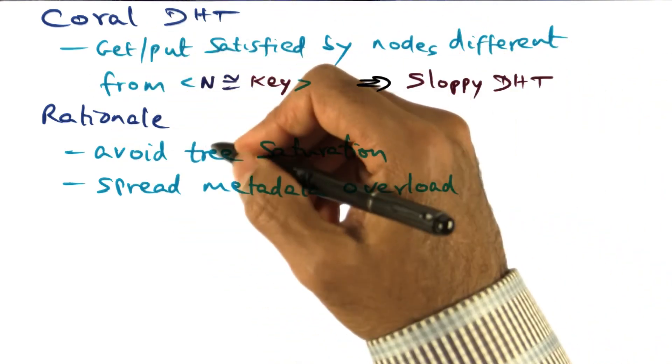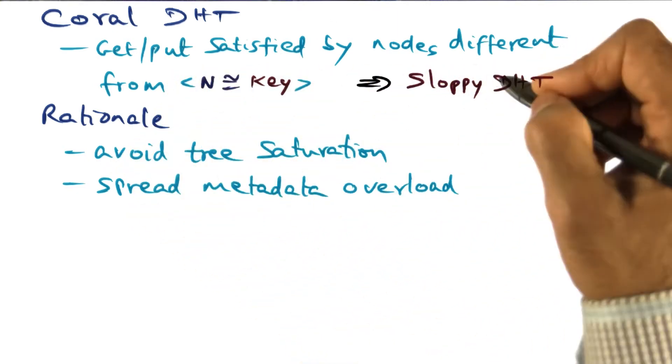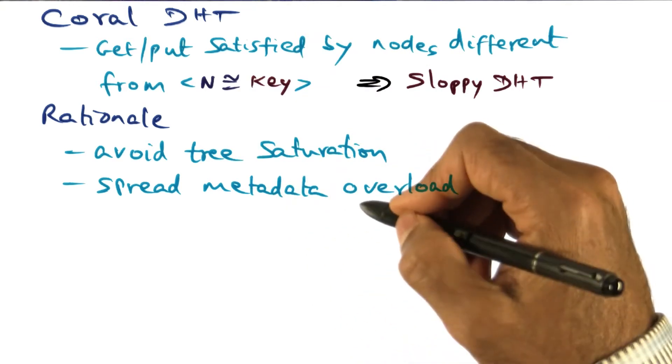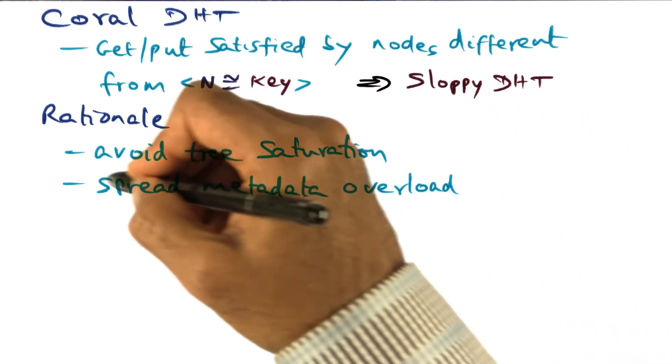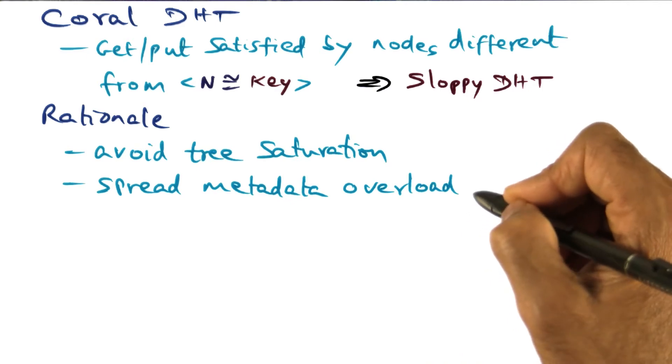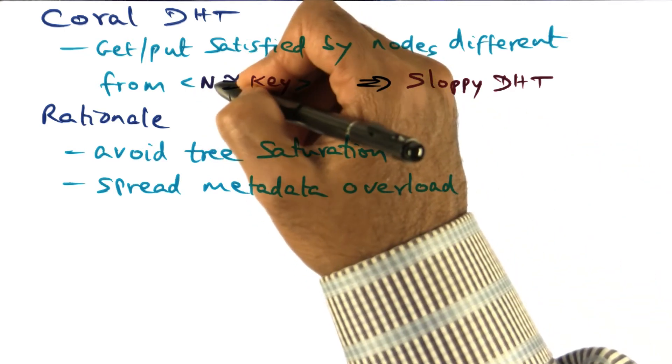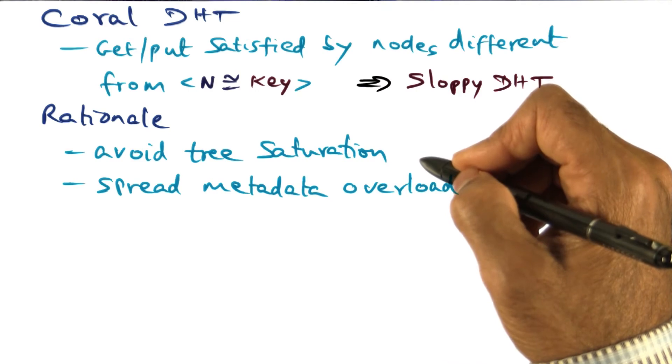The rationale, of course, is you want to avoid tree saturation that comes about when a lot of keys map to a particular node ID. And also, in the process, what we want to do is spread the metadata overload so that no single node in this democratic process of helping one another is saturated or overloaded by being a good citizen.